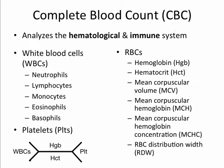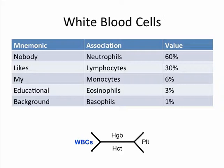As you will recall from anatomy and physiology, there are five groups of white blood cells: neutrophils, lymphocytes, monocytes, eosinophils, and basophils. A good way to remember the quantities of white blood cells is: 'Nobody Likes My Educational Background' — at 60, 30, 6, 3, and 1. These are the median quantities of each group of white blood cells.